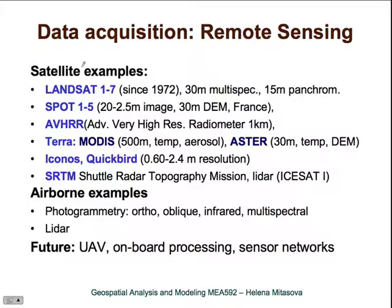Here are some examples of satellite sensors and satellite data that you may work with. One of the datasets we will be using in this course is SRTM data — that's the Shuttle Radar Topography Mission — and in some of the assignments we will describe this data in more detail. Another dataset we will work with is airborne data, including both photogrammetric data and orthophotos, as well as LiDAR data that provides very detailed three-dimensional information.